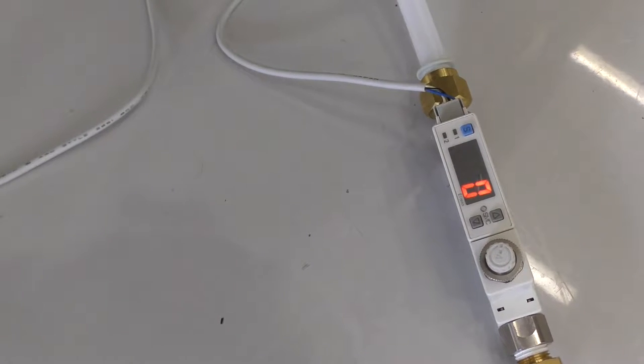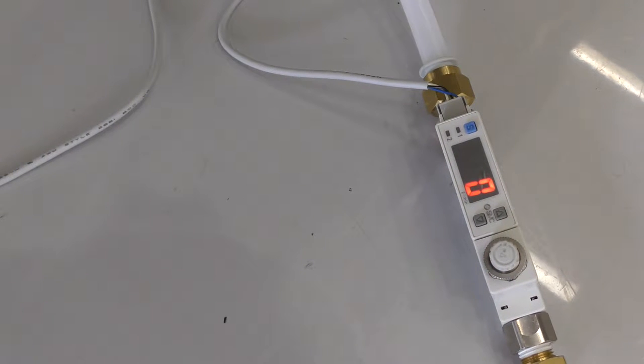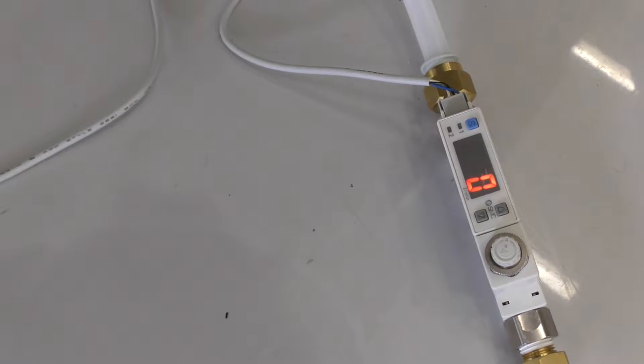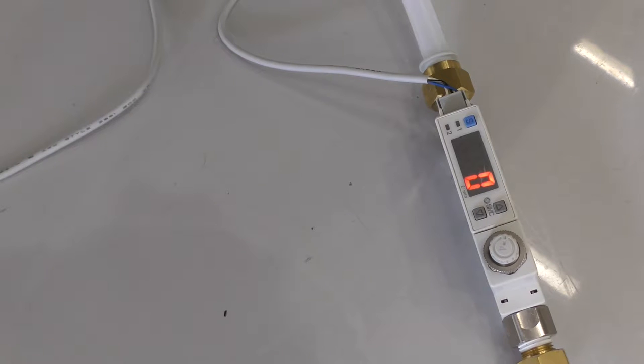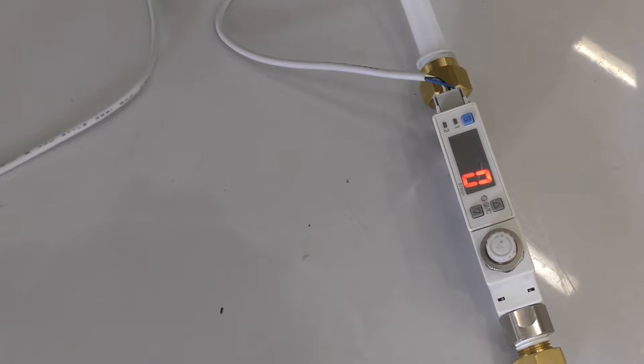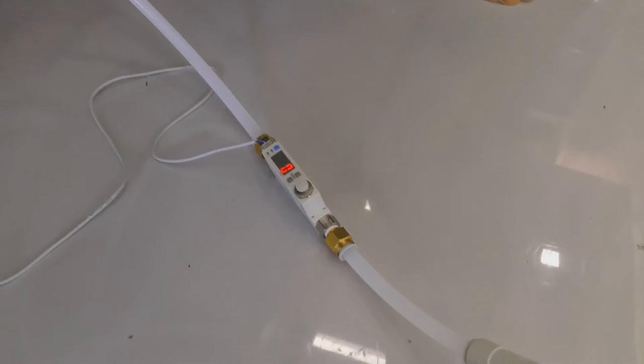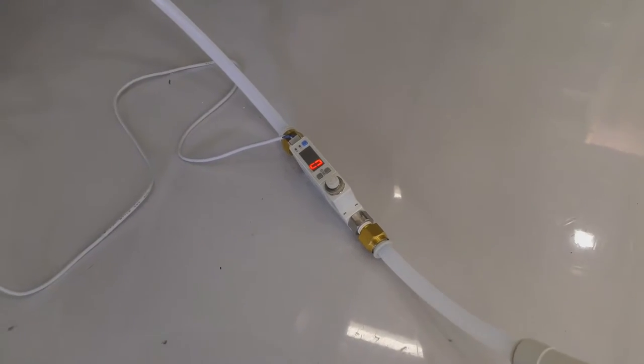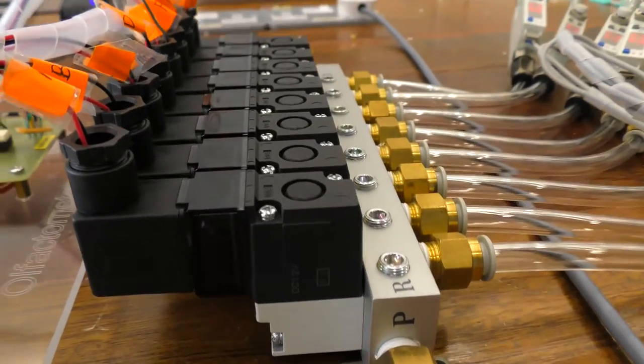The third one is the two-color digital display flow switch. This is to ensure that the flow rate of the air is measured accurately. At this system, we must make sure that the flow rate must be below 10 liters per minute.